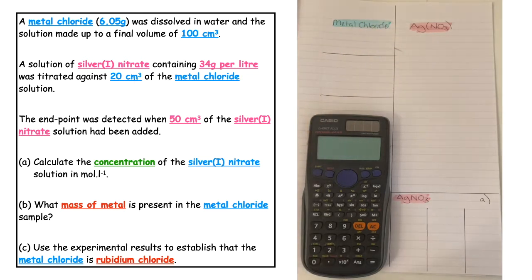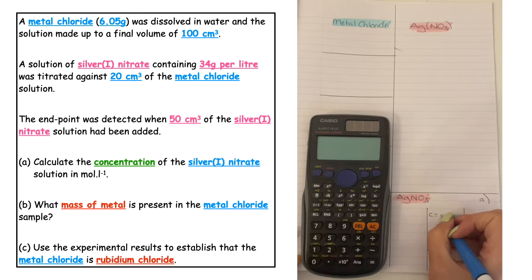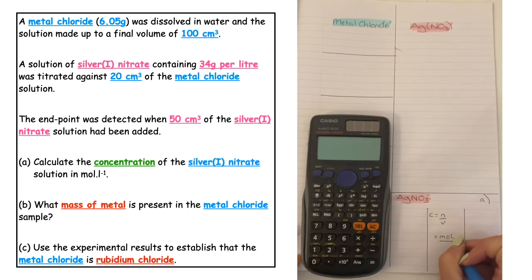Looking at the information we've been given, it wants us to calculate the concentration. We know that concentration is equal to number of moles over volume. If we put that into units, that would be moles over litres.